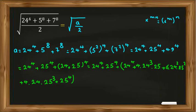It was a. Now I want to find a over 2. You have 24 to the 4, 2 times 24 to the 4 divided by 2 is 24 to the 4. 25 to the 4, 2 times that divided by 2 is 25 to the 4. Plus 4 times 24 cubed divided by 2 will be 2 times 24 cubed.